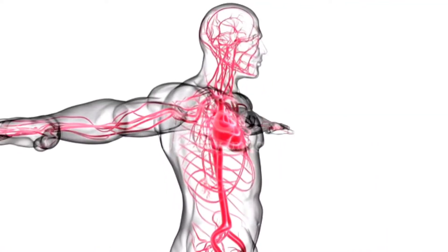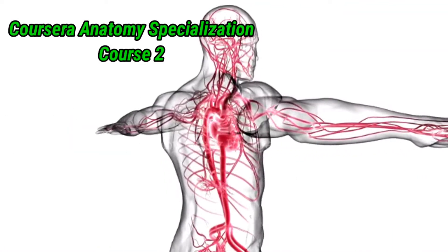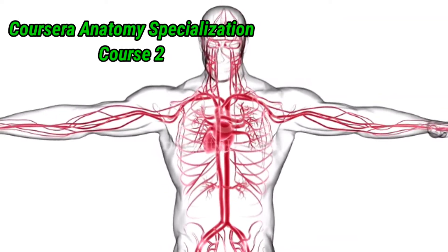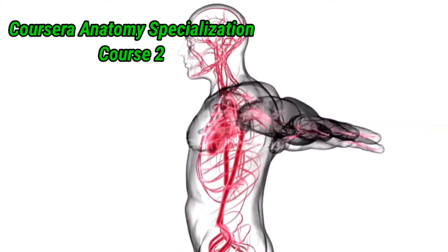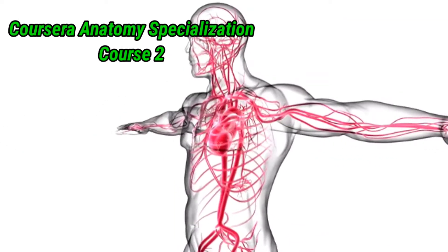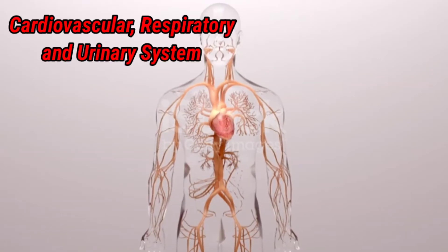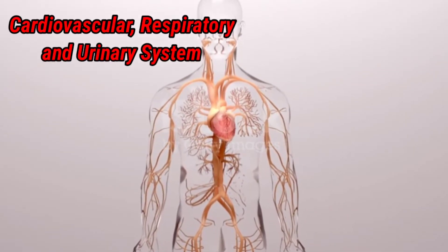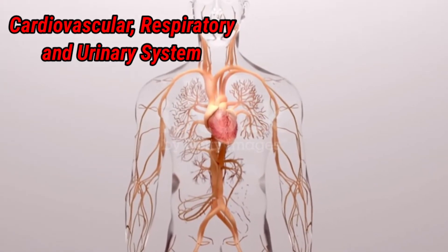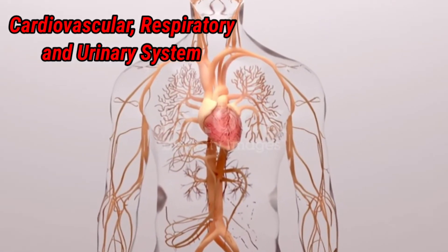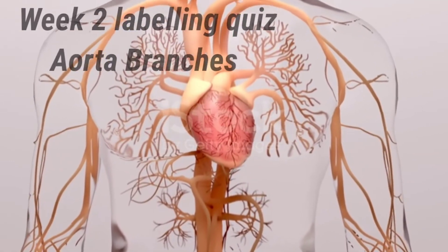Hey guys, hope all of you are doing well. Today our topic is the Coursera anatomy and admin specialization second course, Week 2 quiz, which is named 'Aorta Branches.' Let's start our quiz.